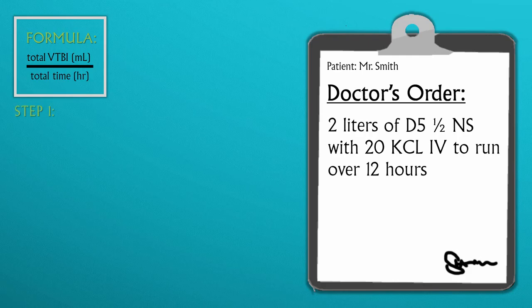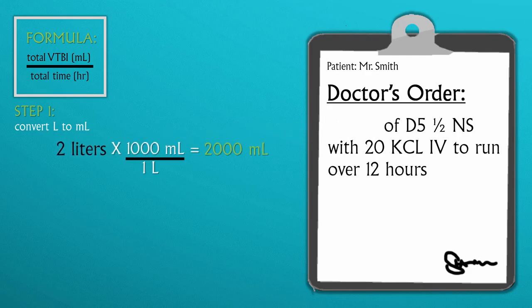The first step is to convert our values to fit the formula. Two liters is equivalent to two thousand milliliters, since one liter equals one thousand milliliters. The second step is to plug the values to the formula.